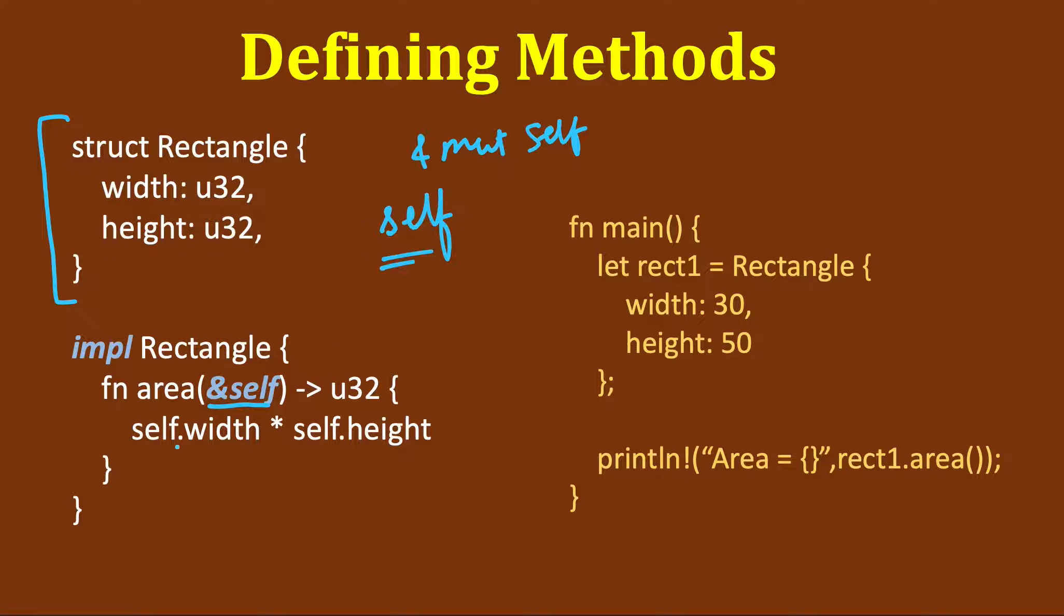You can also pass self, in which case you will take the ownership, but it's not required here because this method just needs to read the data that is present in this rectangle. This is rarely used. You can use it if you want to modify.